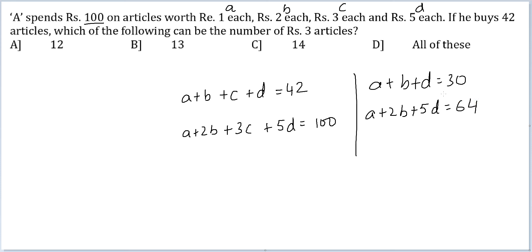Let me see if I can make one acceptable case out of these two things. Twice this: 2A plus 2B plus 2D should be equal to 60. So I get this minus this. So 3D minus A is equal to 4.